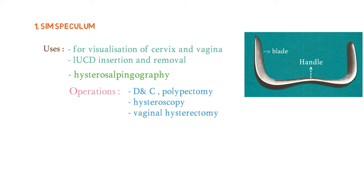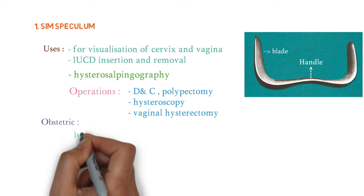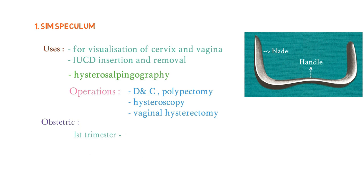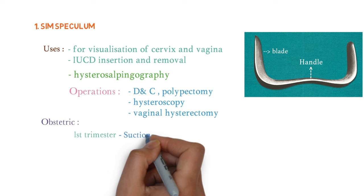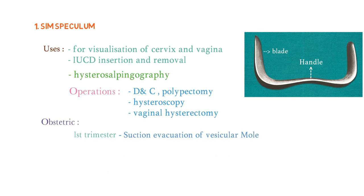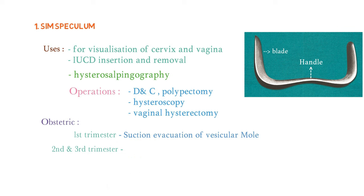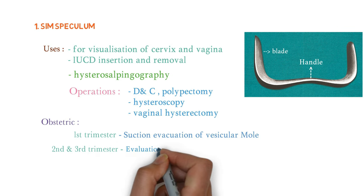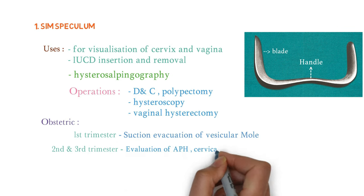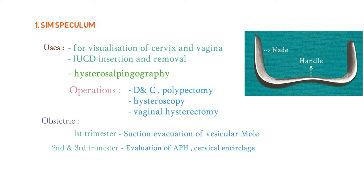Your examiner might ask what are the obstetric uses. In the first trimester, the Sims speculum is used for suction and evacuation of vesicular mole. In the second and third trimester, it is used for evaluation of antepartum hemorrhage and also for cervical cerclage. If you have this instrument, 90 percent of examiners are going to ask about the disadvantages.